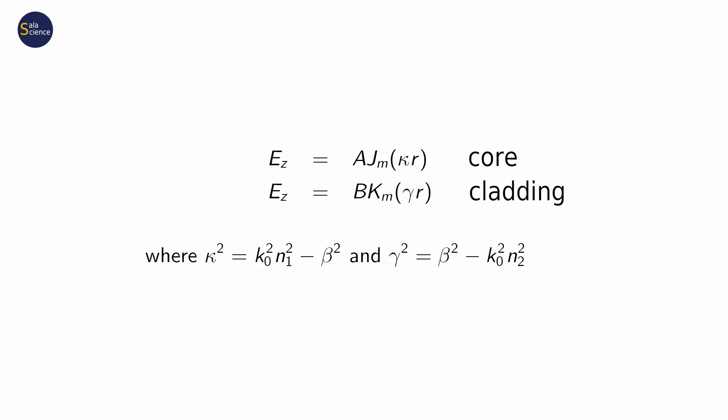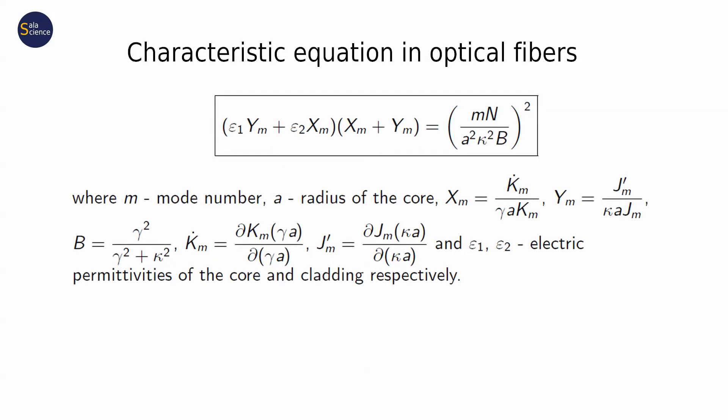R is just a radial coordinate. In optical fiber, the characteristic equation is much more complicated than in planar waveguides. Typically, we have to solve it numerically. Only some special cases can be simplified. By solving this equation, we get propagation constants, beta.